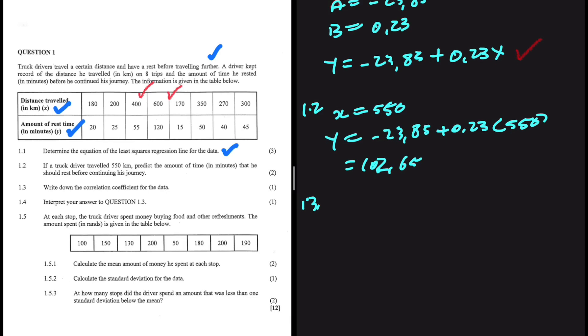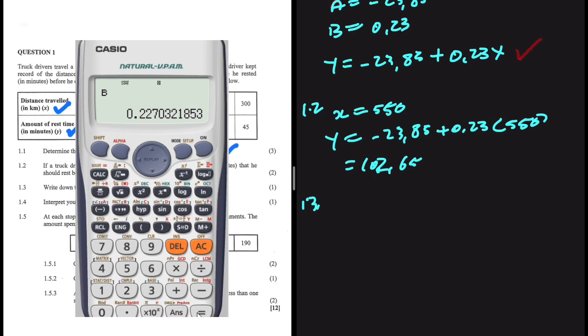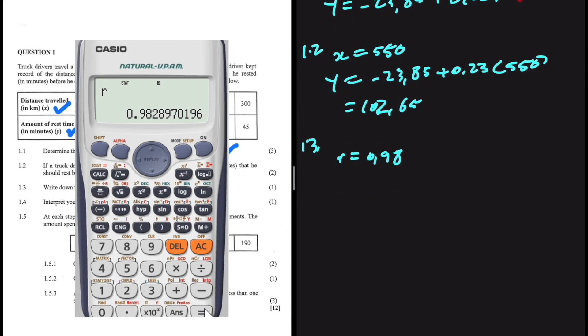Write down the correlation coefficient for the data. Again, in order to do this, we have to use our calculator. So let's go ahead and do that. AC, shift, 1, 5 for regression, and then we press 3 for R, the correlation, right? We get R is equals to 0.98. So that is the correlation coefficient for the data.